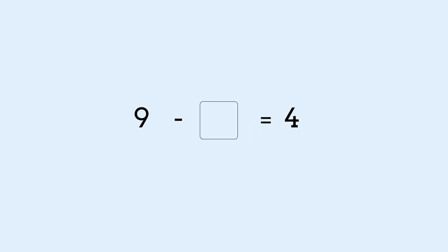Now here's one last example: nine take away something equals four. What is the missing number? Let's find the difference by counting from four to nine.